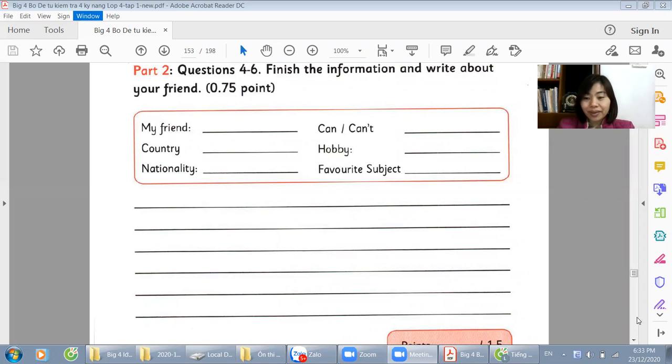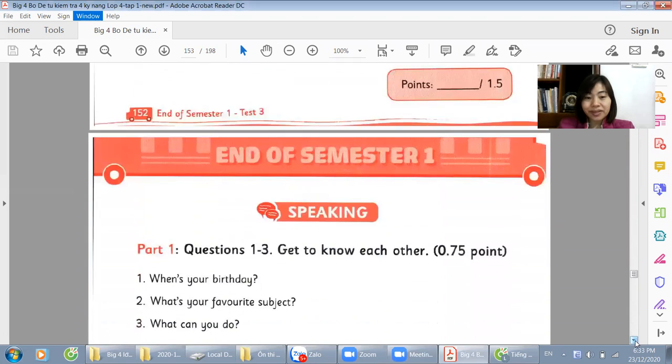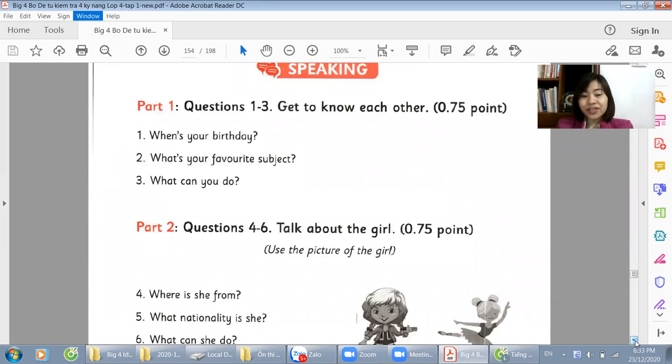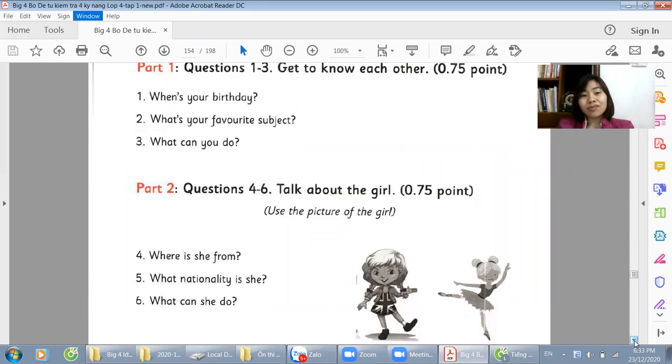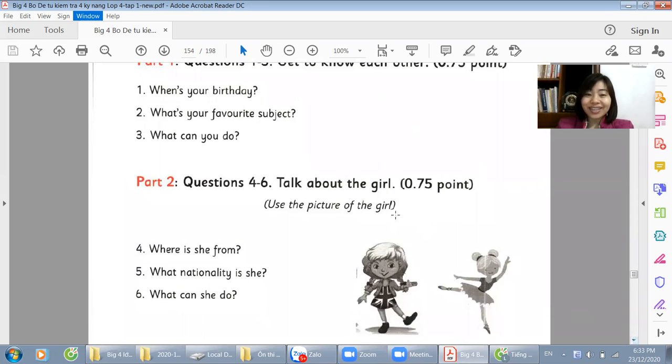We continue with the speaking section. Like the previous two parts, the speaking section will be similar to the writing section. But we will answer verbally. When's your birthday? My birthday is, for example, the 1st of July. What's your favorite subject? My favorite subject is math. What can you do? I can ride a bike. I can drive a car. I can draw a flower. But I can't swim.